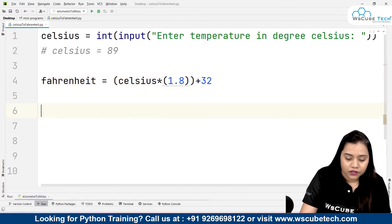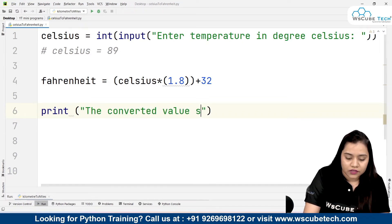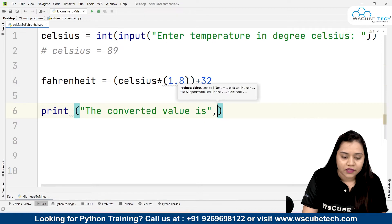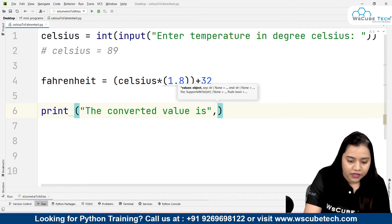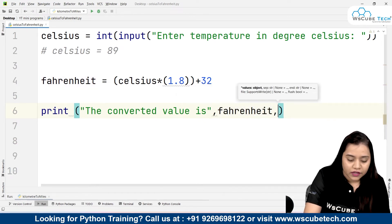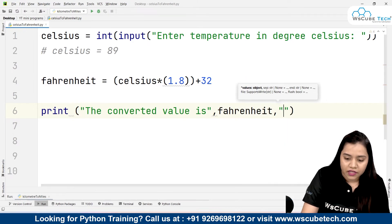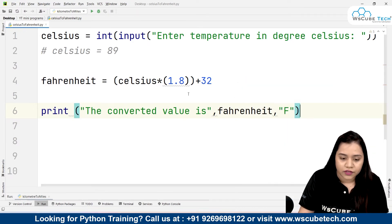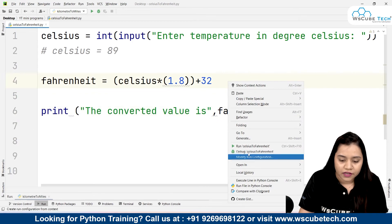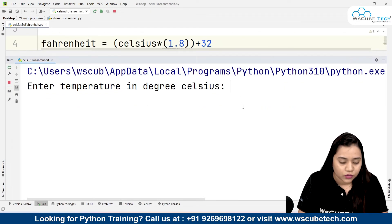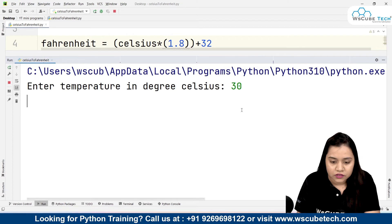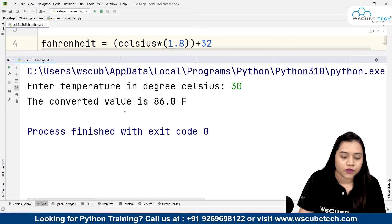Lastly what we need to do is print it. So for printing it all I need to do is write print statement. Inside the print statement we will be writing that the converted value is. I will put a comma to separate the string with the variable and we will be writing Fahrenheit. Comma and lastly I will be writing F inside double quotation. So it will give us the temperature in Fahrenheit and as soon as I run it, if I talk about 30 degrees Celsius it will give me that the converted value is 86.0 Fahrenheit.